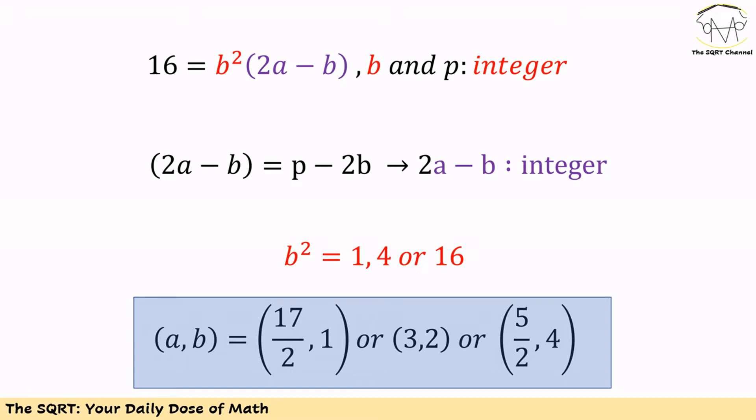Then we're going to have 17 over 2 for a when b is equal to 1, 3 for a when b is equal to 2, and 5 over 2 for a when b is equal to 4. So we're going to have 3 possible answers for a and b.